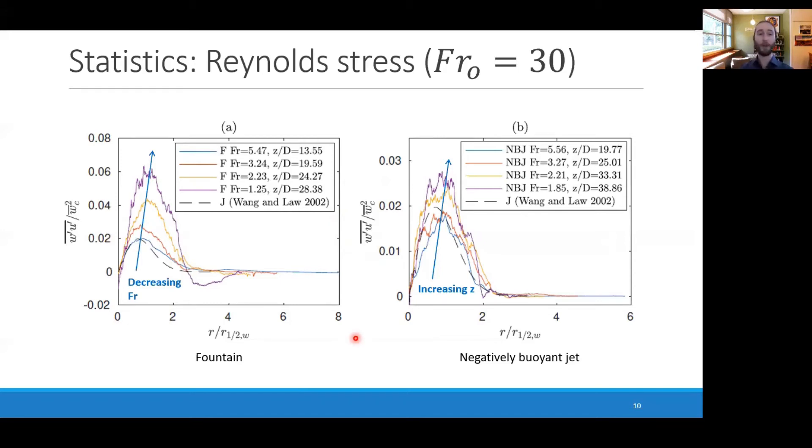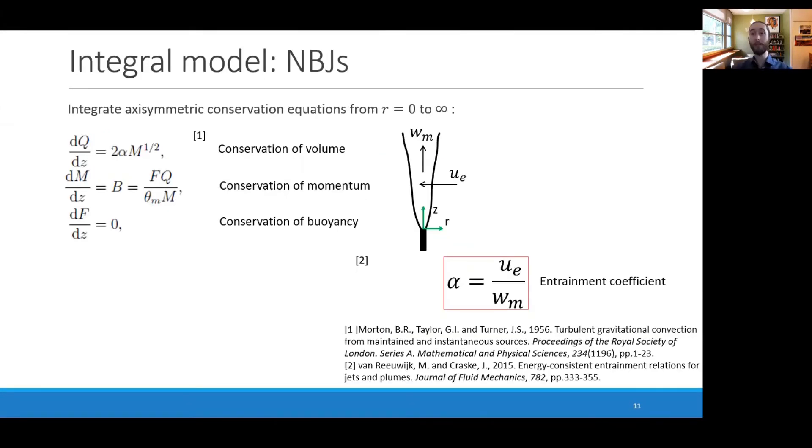Another way to think about that is that the turbulence is not decreasing at the same rate as the mean flow. This makes sense if you just think about the top of a fountain, where the velocity goes to zero, but there is still non-zero turbulence. When it comes to modeling the negatively buoyant jet stage, we can attempt to use some of the same approaches that are commonly applied to neutral and buoyant jets, since there's no return flow. That is, we integrate the composite conservation equations from r equals zero to infinity, that's radially, to derive this set of ODEs, that is the conservation of volume, momentum, and buoyancy flux.